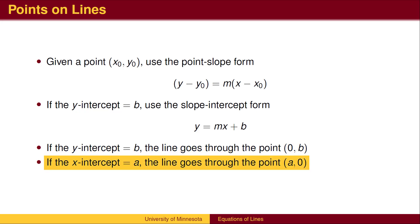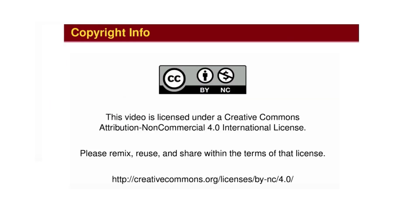If the x-intercept is a, the line goes through the point (a,0).